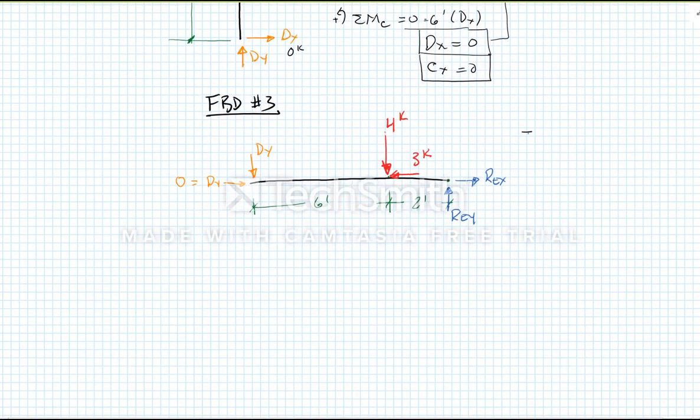Let's look at the sum of the forces in the x-direction, to the right being positive, has to equal zero equals DX minus three kips plus REX. But we know that DX has to equal zero from up here. So we can conclude from this that REX is three kips.